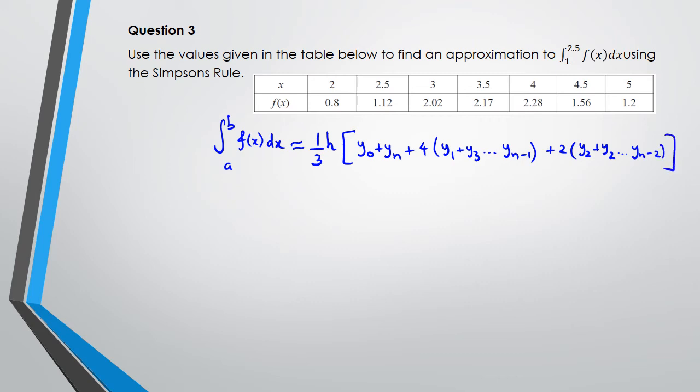So what I would actually do is, once you write the formula, go back and write down all your ends first. You've got 0, 1, 2, 3, 4, 5, and 6. Then it's a matter of just substituting new values. So you've got one third multiplied by 0.5, because that's what it's increasing by, multiplied by y₀ which is 0.8, plus yₙ which is 1.2.